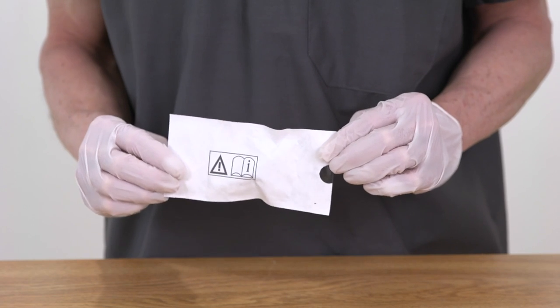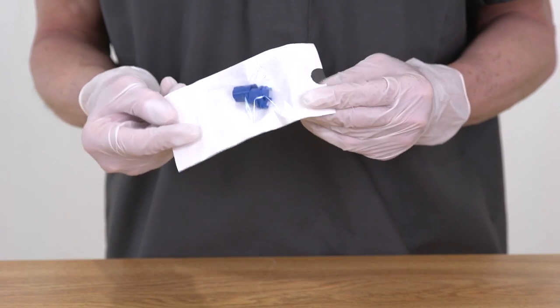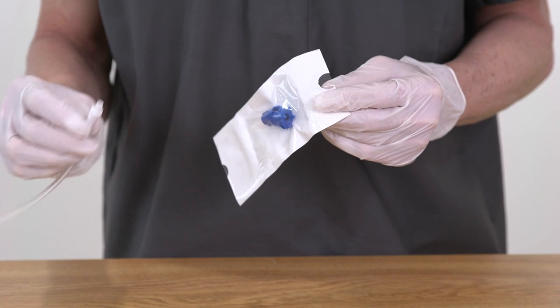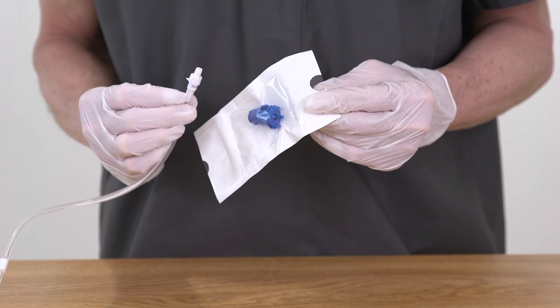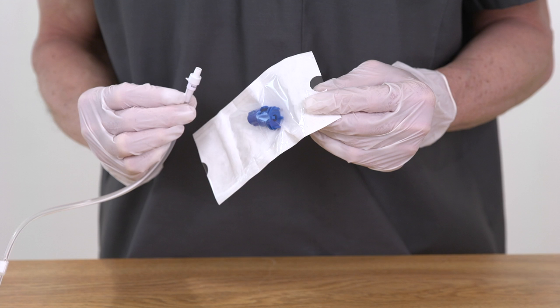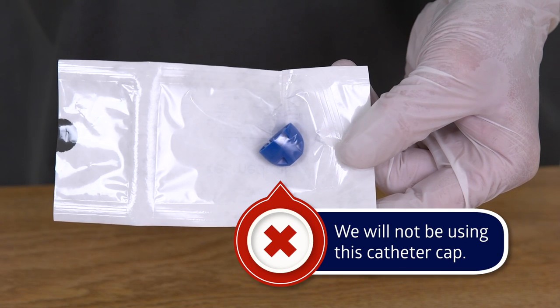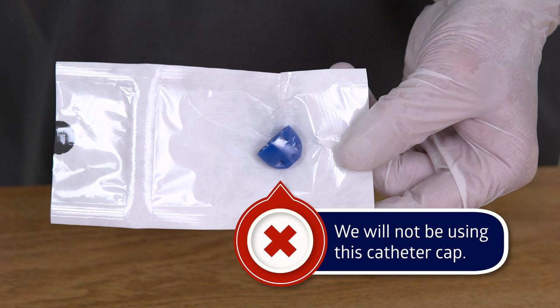The other packet has a small catheter cap and an adapter that allows the ROCKET IPC Pleural Drainage System to be used if the patient's catheter looks like this. We will be showing how to use this catheter cap and adapter. Aside from the adapter, all other steps are the same for both catheter types.